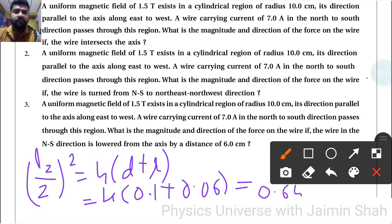Now this is square, left hand side square, so taking square root of 0.64, 0.8 will come. So L2 by 2 is equal to 0.8, and into 2, so L2 is 1.6 meter. So now this is our new length, that is 1.6.